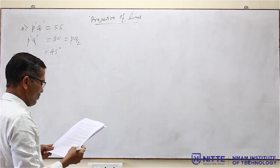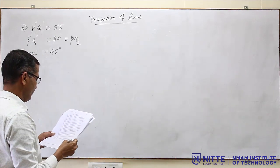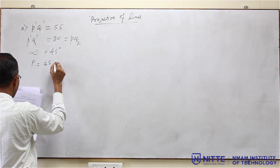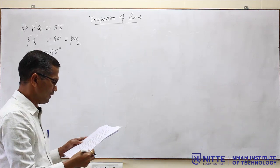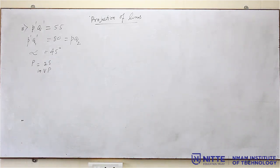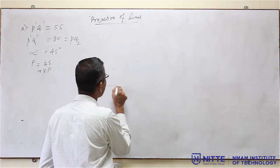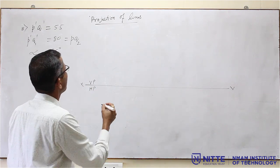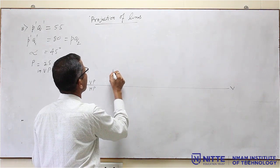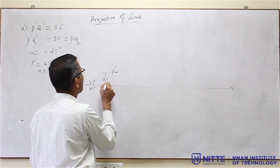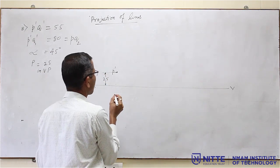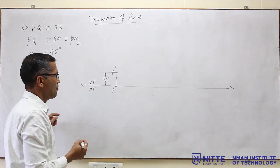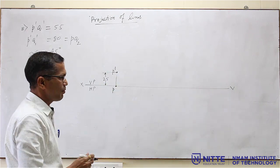The 45 degrees refers to the front view inclination, so this is alpha — not theta or phi. The end P is 25mm above the XY line and is in VP. Whenever a point is in VP, its top view will be on the XY line. So P will be exactly on the XY line. Draw the XY line, locate P dash 25mm above XY, and P is on the XY line — P and P dash are now located.